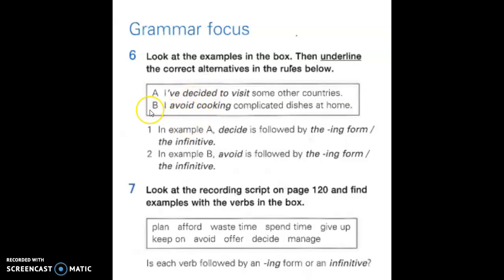And then get them to talk together and decide which is the correct answer, one or two. So they need to say whether decide in sentence A is followed by the -ing form or the infinitive. So if I've decided to visit, it's followed by the infinitive. So they just underline that one and then they do the same activity for B. I avoid cooking. So avoid is followed by the -ing form, the -ing form.